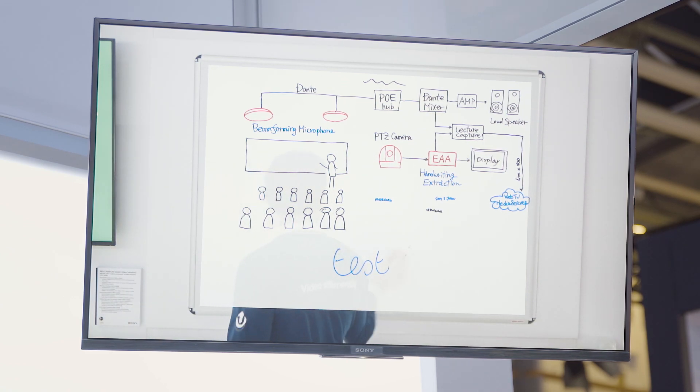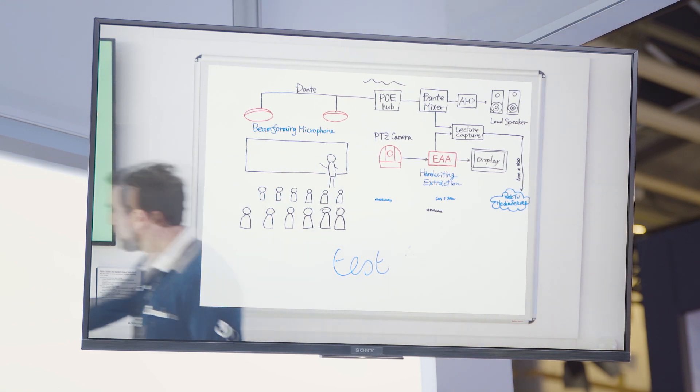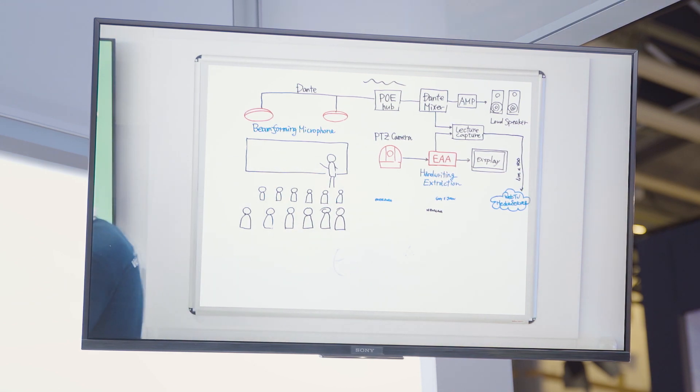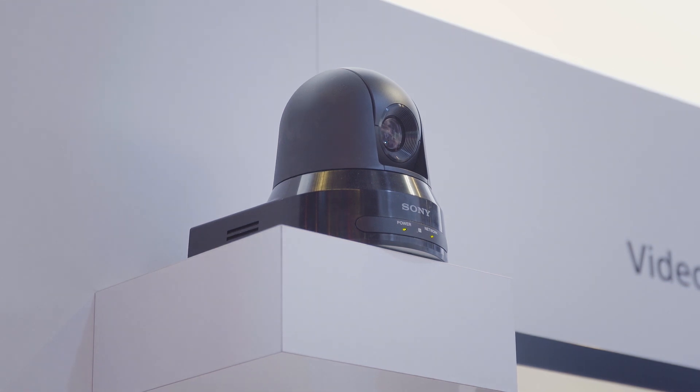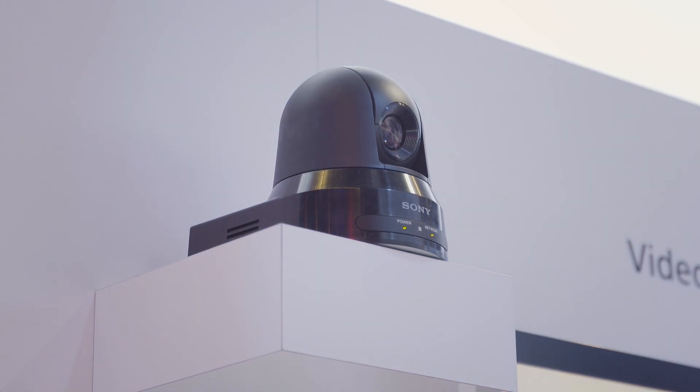The edge analytics system with handwriting extraction software is very simple to use. We simply have a camera at the back of the teaching space focused in on to the writing surface area — white or blackboard. We create a digital layer on that writing surface area to be able to extract and enhance with colour and contrast anything drawn or written.